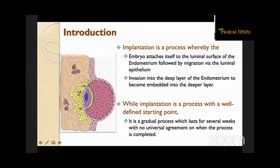Implantation is a process whereby the embryo attaches itself to the luminal surface of the endometrium, followed by migration via the luminal epithelium, and invasion into the deep layer of the endometrium to become embedded. While implantation is a process with a well-defined starting point, it is a gradual process which lasts for several weeks with no universal agreement on when the process is completed.